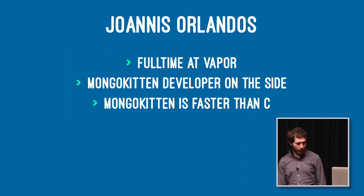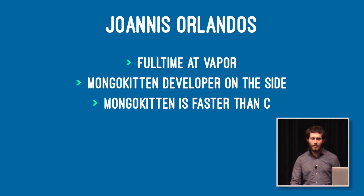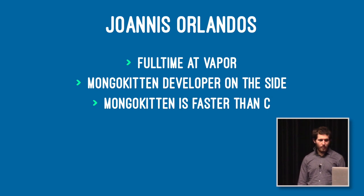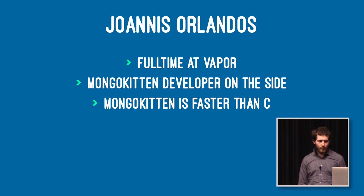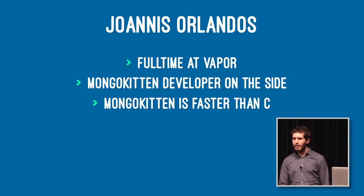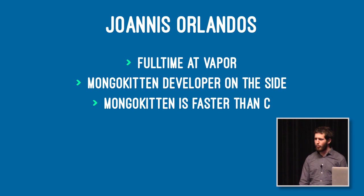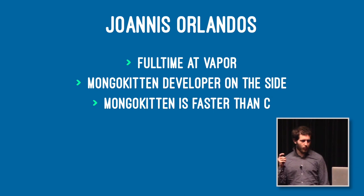MongoKitten is faster than C. It's not perfect yet — there's still a way to go — but MongoKitten is faster than C. This talk is about async and how we're planning to achieve the last bit. There's a lot of information on how to make your application more performant, and async is there to help.